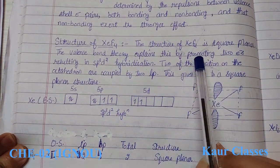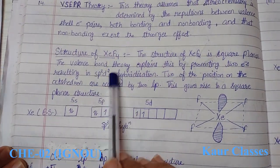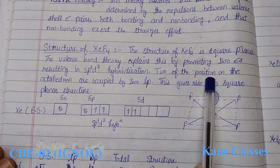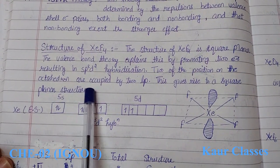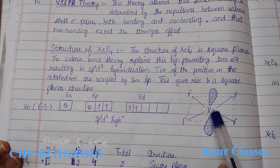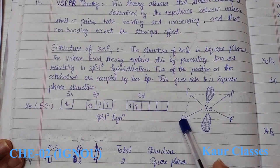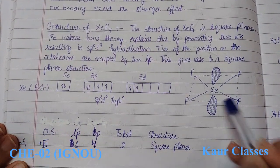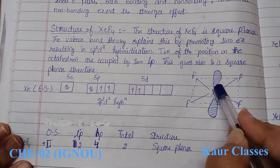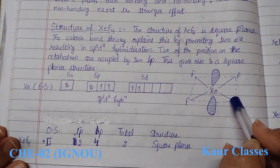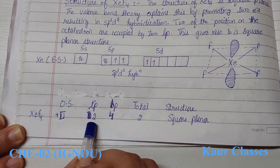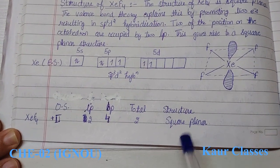Valence bond theory tells us that by promoting two electrons, XeF4 achieves sp3d2 hybridization. Two positions on the octahedron are occupied by two lone pairs and the other four form a square planar geometry. Xenon has four bond pairs with fluorine and two lone pairs. The oxidation state is +4, bond pairs are 4, lone pairs are 2, giving square planar geometry.